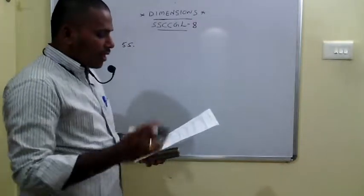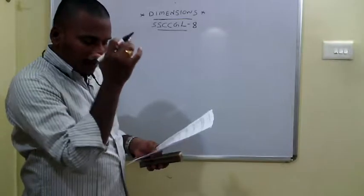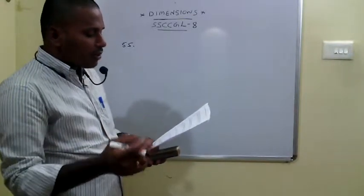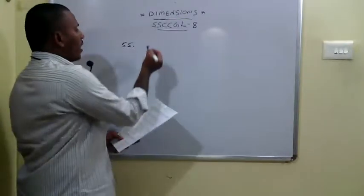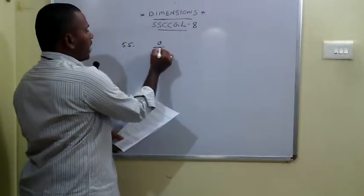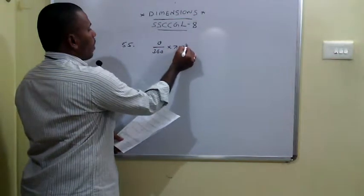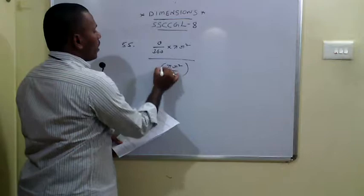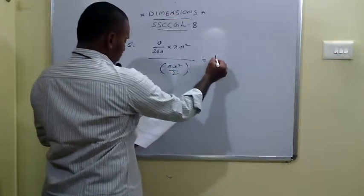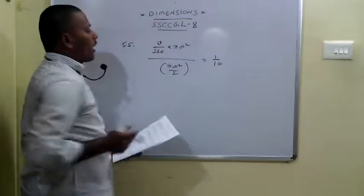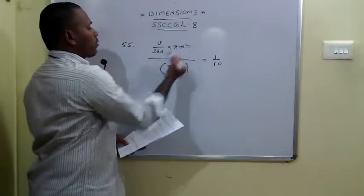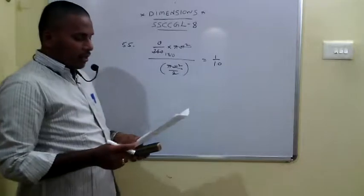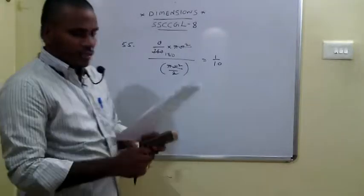The 55th problem asks: what is the angle in degrees made by a sector whose area to the area of a semicircle is 1 to 10? The area of a sector is theta by 360 into pi r squared, and the area of a semicircle is pi r squared by 2. Setting their ratio equal to 1 by 10 and cancelling pi r squared, you get theta equals 18 degrees.